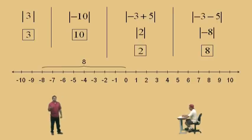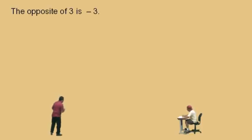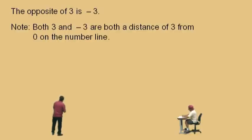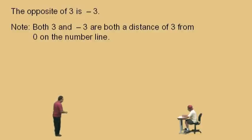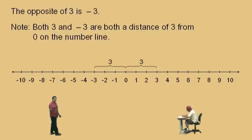We're going to move on to another concept called the opposite. This is where students kind of get confused, because you're going to hear me say opposite and negative. We're so used to saying negative when it comes to an opposite, but opposites actually have something to do with distance. The opposite of 3 is negative 3. Both 3 and negative 3 are each a distance of 3 from 0 on the number line. So negative 3 and 3 are called opposites of each other, just like 4 and negative 4, or 5 and negative 5.